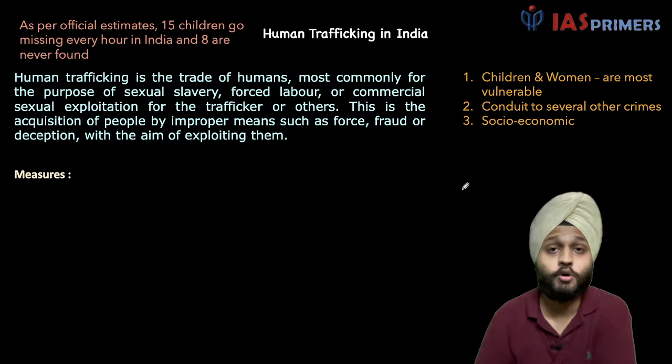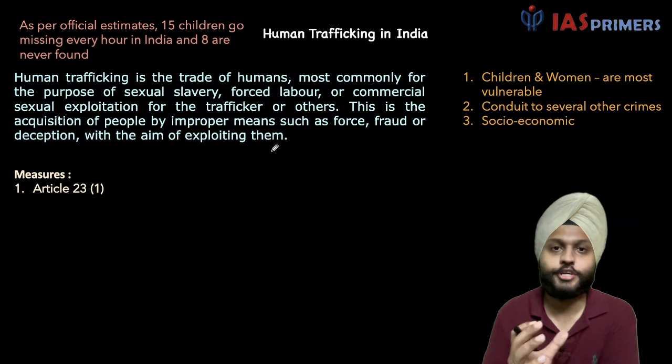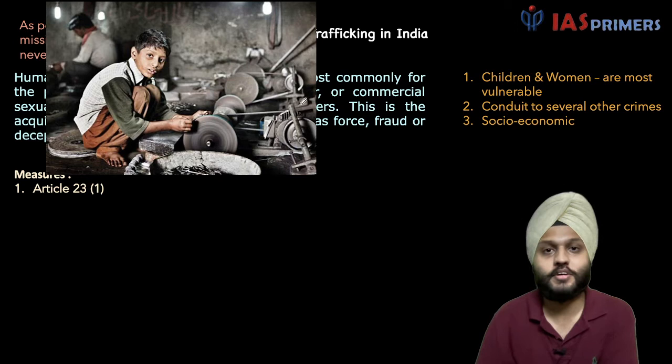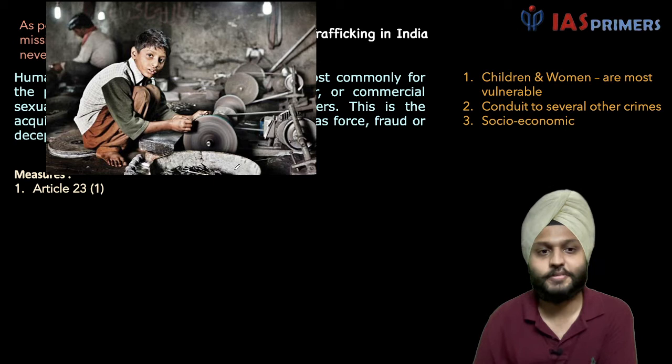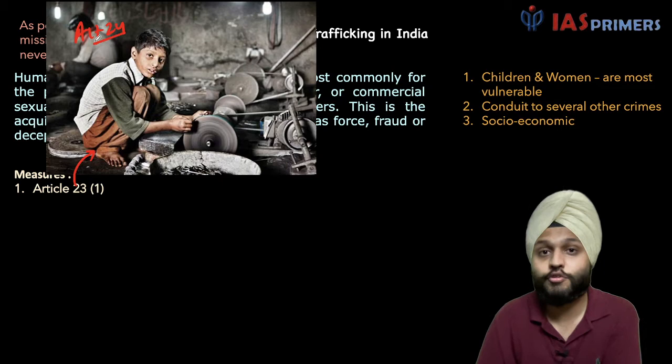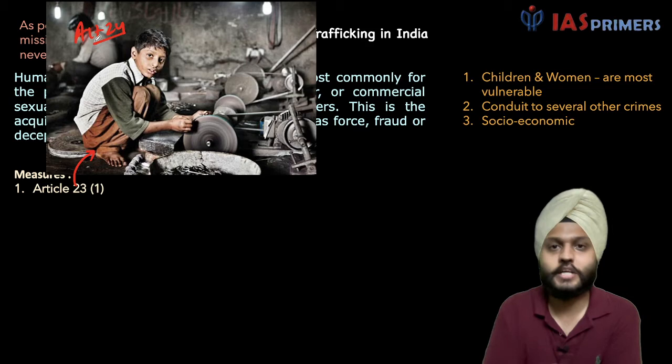Let us see the measures taken by the government to address the issue of human trafficking. Our Constitution has the provision of Article 23, which prohibits traffic in human beings and forced labor. This violates Article 23. And also, it is violative of Article 24, which talks about the abolition of child labor. So both are related and we can draw an extension here.